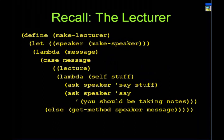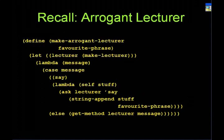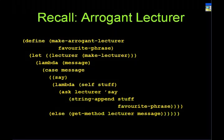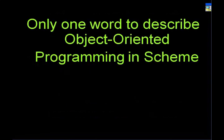This should also look very familiar. Here we're extending the speaker, and then adding a new method called 'lecture' where you take in another parameter called 'stuff'. You're asking the speaker to say stuff, and also you should be taking notes — that's what a lecturer does. If the message you pass into lecturer is not defined there, you'll just give it to the speaker. And finally you have your arrogant lecturer, which extends lecturer and overwrites 'say'. Say was defined previously in speaker, and the lecturer says whatever you want him to say and appends his favorite phrase.